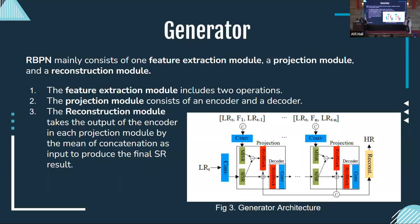The generator has three main modules: the feature extraction module, the projection module, and the reconstruction module. The feature extraction module extracts features from the target frame and from the concatenation of the target frame and neighboring frames to feed into the model. The projection module consists of an encoder and a decoder. Finally, the reconstruction module consists of residual blocks along with single-image and multiple-image super-resolution to produce high-resolution frames. This will be used as our generator in the model.